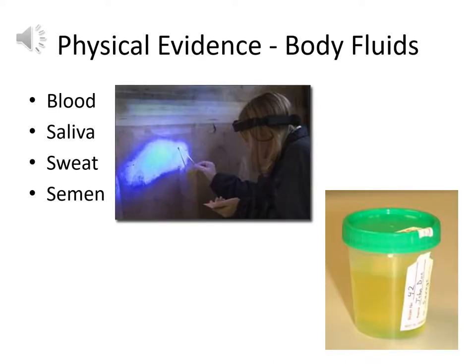The first type of physical evidence we'll mention is body fluids, which are biological evidence. DNA technology is fairly recent — it was applied in the forensic setting from the mid-1980s, and it took several years after that before it became commonplace. Nowadays, DNA analysis is expected in cases of violent crime; juries expect to hear about it. Blood, saliva, sweat, and semen are all potential sources of DNA. Urine is a fairly sterile body fluid and is not typically as good a source of DNA.